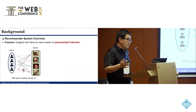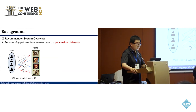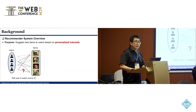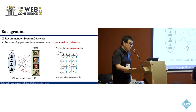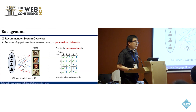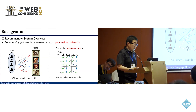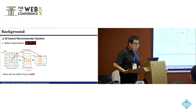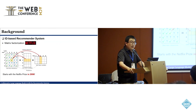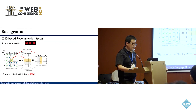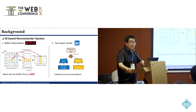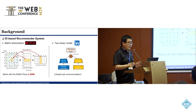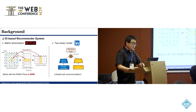This is a recommender system session at the web conference. Generally speaking, we have a bunch of users and a bunch of items. Our goal is to suggest new items to users based on their personalized interest. Traditionally, this problem can be formulated as a matrix imputation problem — we have some observed interactions and we're trying to impute the missing values. The field of recommender systems has long been dominated by the ID-based learning paradigm. Matrix factorization is a very popular method: we decompose the user-item interaction matrix into user and item embedding matrices, and the dot product between user and item vectors approximates the observed interactions.